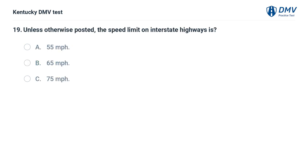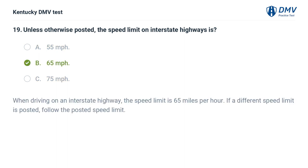Unless otherwise posted, the speed limit on interstate highways is: A. 55 miles per hour. B. 65 miles per hour. When driving on an interstate highway, the speed limit is 65 miles per hour. If a different speed limit is posted, follow the posted speed limit.